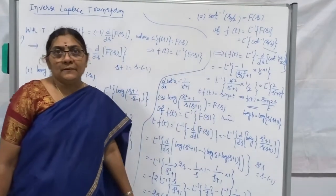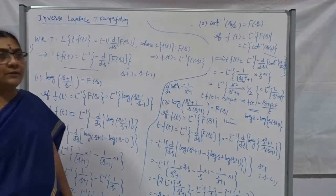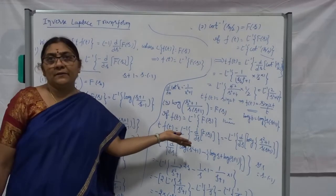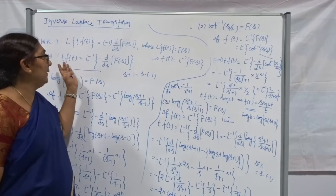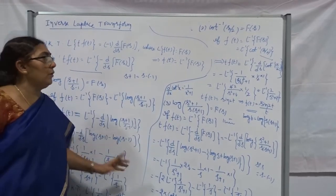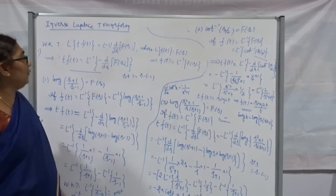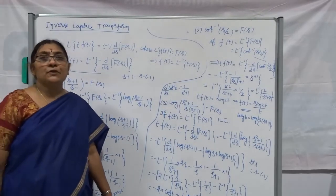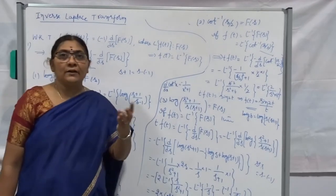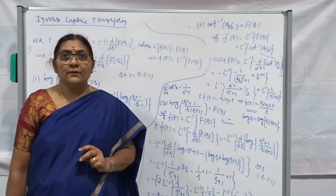I have solved three problems in this class based on the standard formula: t·f(t) = L⁻¹ of minus the first derivative of F(s), where there is no restriction. Once you differentiate and get a standard form, we easily get the inverse. Differentiation is easier than integration compared to the second and third results. Keep in mind: if you want to use this formula, differentiate first, then apply linearity property term by term. In most cases, this method is preferable. Thank you very much for listening. If you like the video, please hit the like button and subscribe to my channel.